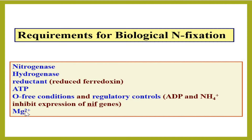These are the requirements — the raw materials — for biological nitrogen fixation. The nitrogenase enzyme plays the big role of converting nitrogen into ammonia. The second enzyme is hydrogenase, which maintains and balances hydrogen ions and evolved hydrogen. A reductant is also necessary for electron transfer.